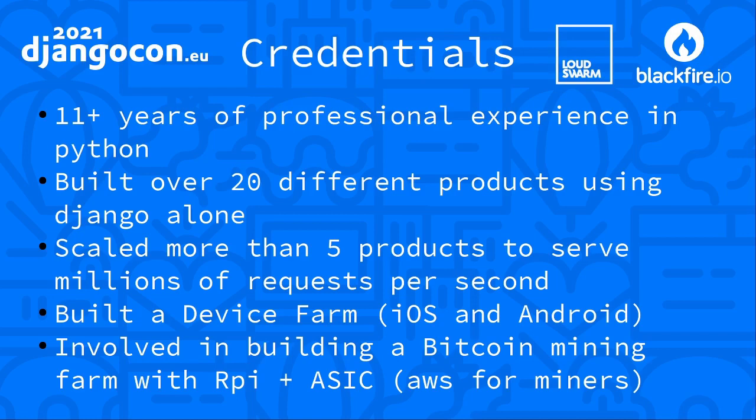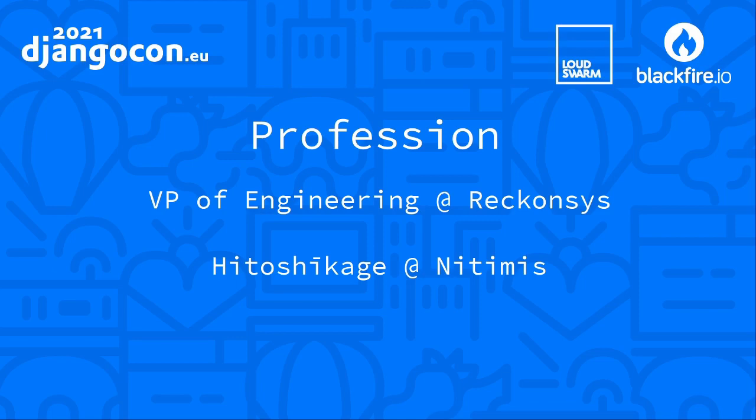About my credentials: I have about 11 plus years of experience in Python. I've built over 20 different products using just Django alone. I've scaled more than five products to serve nearly millions of requests per second. I built an iOS and Android device firmware used for security testing, and I was involved in building a Bitcoin mining firm with Raspberry Pi and custom ASIC chips — sort of like an AWS for Bitcoin miners. I work as VP of Engineering at Reconcis and as a tech lead at a non-profit called Intimis.